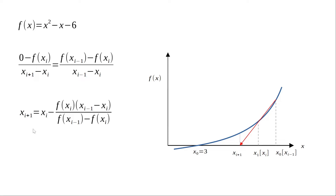Using this formula we estimate xᵢ₊₁, then find the value of the function at xᵢ₊₁, and draw a secant between xᵢ and xᵢ₊₁. Extending this secant to the x-axis gives xᵢ₊₂. We continue this process until we converge to the root, at which point xᵢ₊₁ equals xᵢ and no further improvement is found.